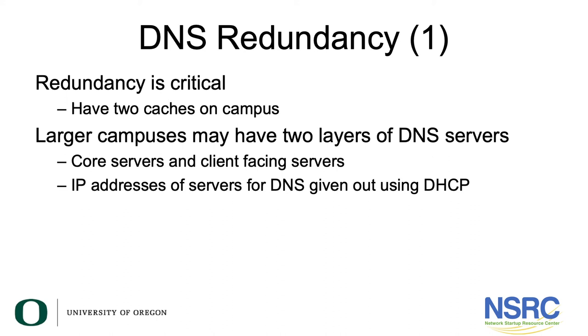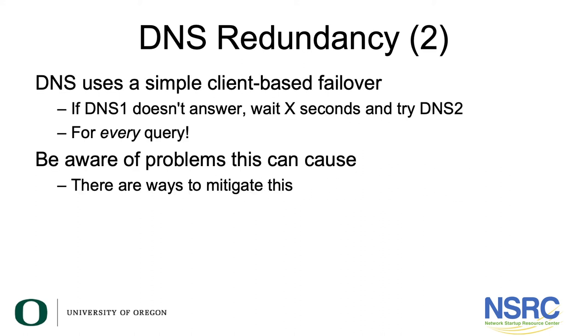Larger campuses may have two layers of DNS servers: core servers and client-facing servers. The IP addresses of the DNS resolvers are handed out using the DHCP service. DNS uses a very simple client-based failover — if DNS 1 doesn't answer, wait x seconds and try DNS 2, and it does this for every query. The value of x depends entirely on the client operating system, so be aware of problems this may cause, though there are ways to mitigate it.